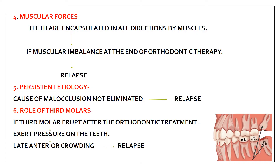The next cause is persistent etiology. If the patient has any parafunctional habits like grinding, clenching, or thumb sucking, and that habit is not eliminated at the end of treatment, then because the cause of the malocclusion has not been removed, relapse will occur. The parafunctional habit must be completely eliminated when orthodontic treatment ends.